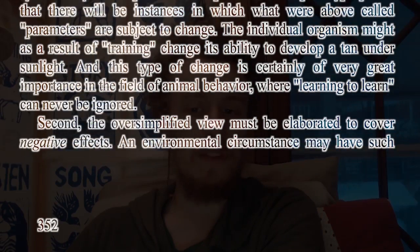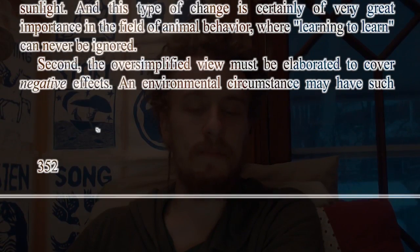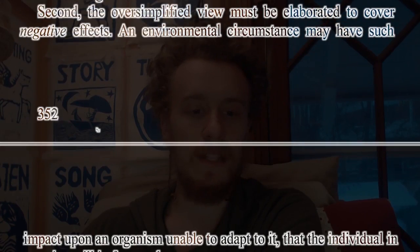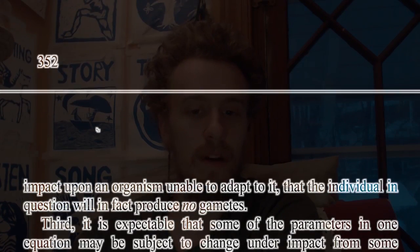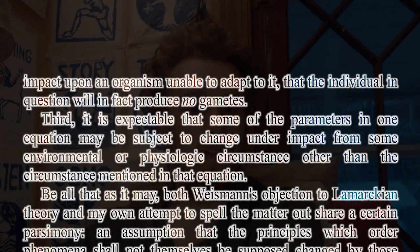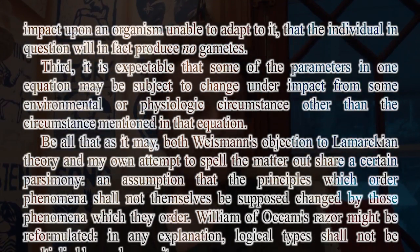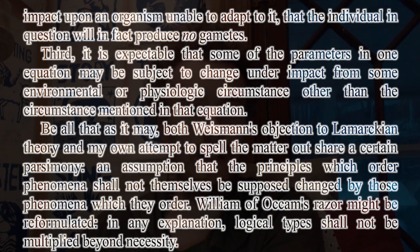Second, the oversimplified view must be elaborated to cover negative effects. An environmental circumstance may have such impact upon an organism unable to adapt to it that the individual in question will in fact produce no gametes. Third, it is expectable that some of the parameters in one equation may be subject to change under impact from some environmental or physiologic circumstance other than the circumstances mentioned in that equation.